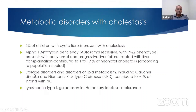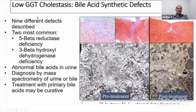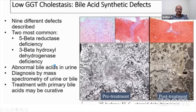Other metabolic disorders include Gaucher's disease, Niemann-Pick type C, tyrosinemia type 1, galactosemia, and hereditary fructose intolerance, as discussed earlier. Low GGT conditions also include bile acid synthetic disorders, where abnormal bile acids are detected in the urine. Diagnosis is by mass spectrometry, and these conditions can be treated by primary bile acid replacement, such as chenodeoxycholic acid.